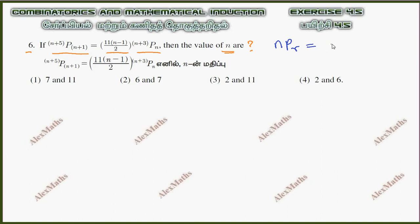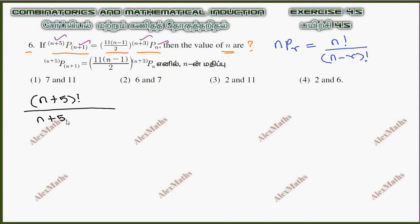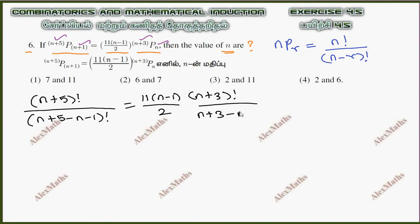NPR we have to use. NPR is n factorial divided by (n minus r) factorial. Now in the first term, this is n and this is r, so n is (n+5) and r is (n+1). The numerator is (n+5) factorial divided by (n+5) minus (n+1), which simplifies. On the right side, 11 into (n-1)/2, and the value is (n+3) factorial divided by (n+3) minus n. The n minus n terms cancel on both sides.